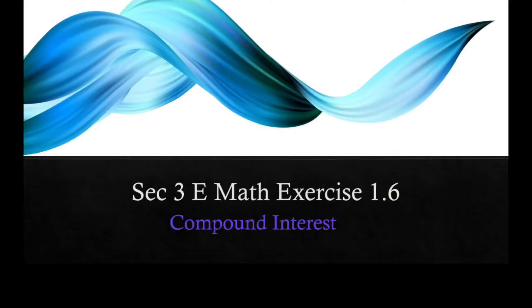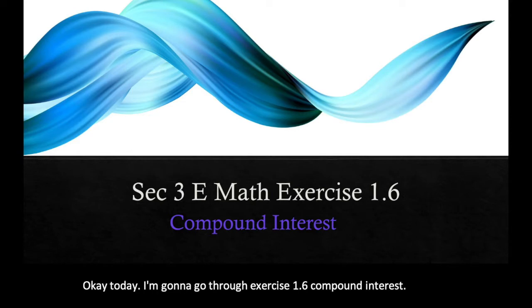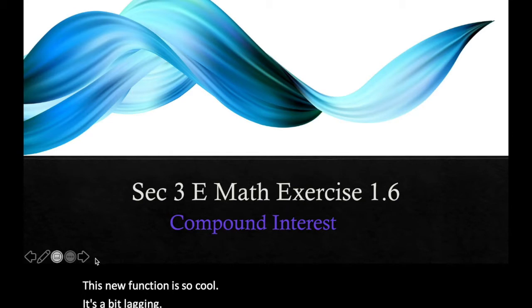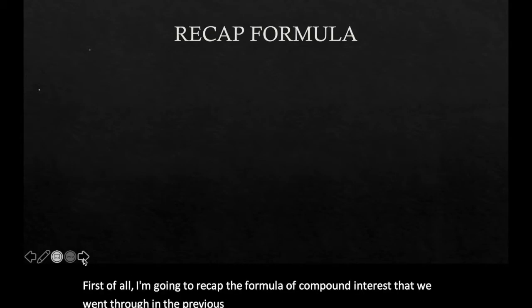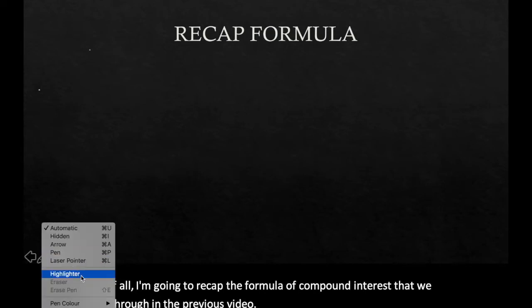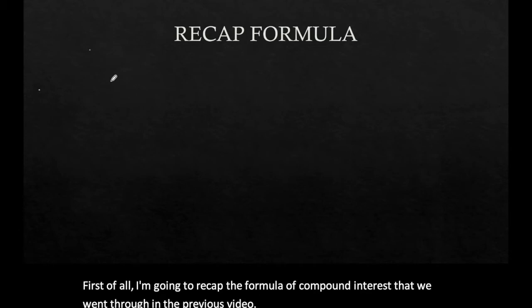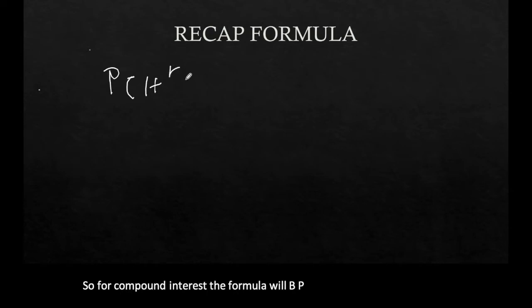Today I'm going to go through exercise 1.6 on compound interest. Let's move on — first I'm going to recap the formula of compound interest that we went through in the previous video. For compound interest, the formula will be P times (1 + r/100) to the power of n.